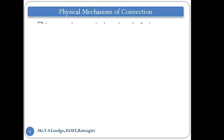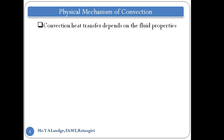The physical mechanism of convection. As in the last lecture, I mentioned that convection is a very complex process, and there are a number of parameters affecting the convective heat transfer rate. So, what are the parameters on which convection heat transfer is affected?